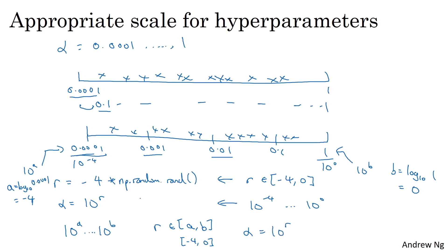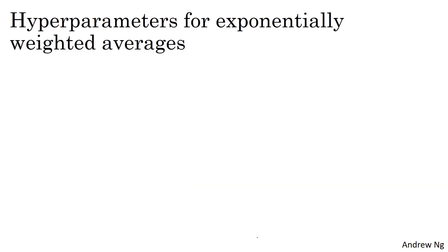Okay, so just to recap, to sample on the log scale, you take the low value, take logs to figure out what is a, take the high value, take a log to figure out what is b. So you're now trying to sample from 10 to the a to 10 to the b on the log scale. So you set r uniformly at random between a and b. And then you set the hyperparameter to be 10 to the r. So that's how you implement sampling on this logarithmic scale.